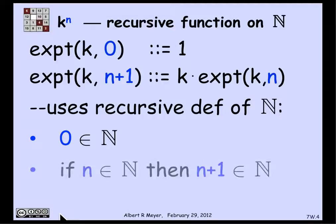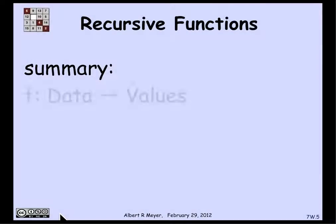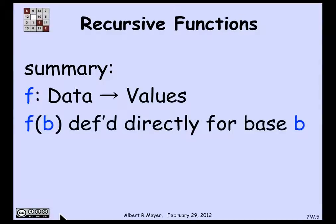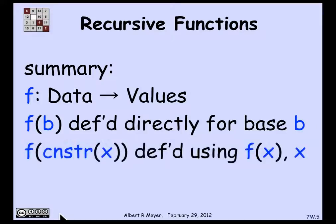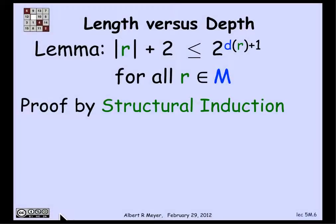The non-negative integers can be defined recursively: 0 is a non-negative integer, and if n is a non-negative integer then n+1 is a non-negative integer. To summarize, the recipe for a recursive function definition is: f of b is defined directly for the base cases b, and f of the constructor of x is defined using f of x and x. Once you have a function defined recursively, you can prove things about it by structural induction.